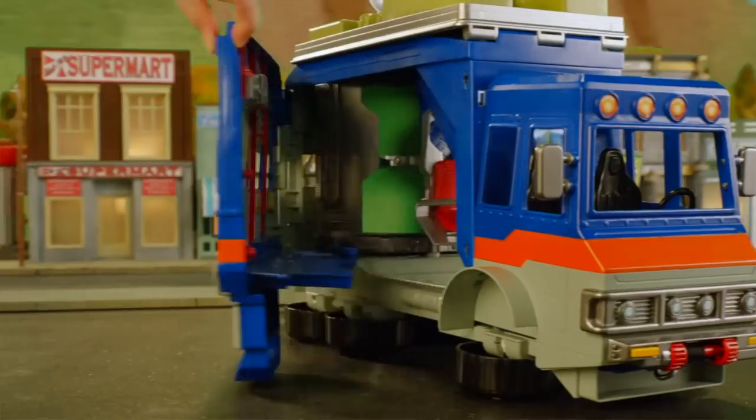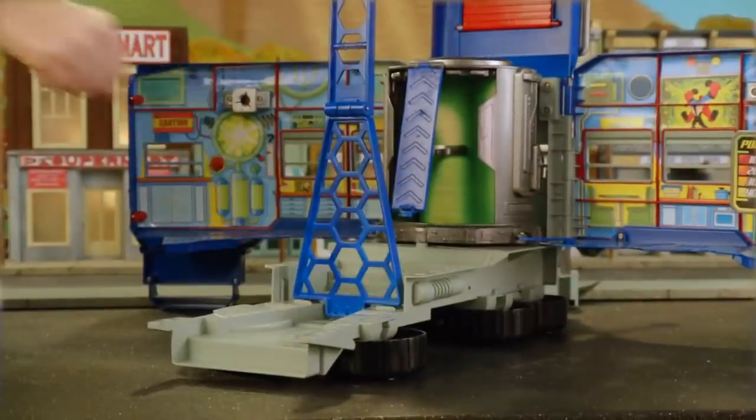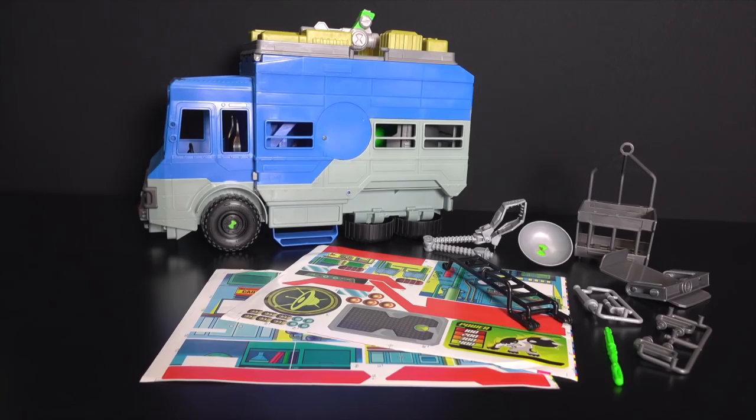It's the Rust Bucket, the vehicle that transforms into Ben's Alien Headquarters. The simple assembly and setup is easy and fun.